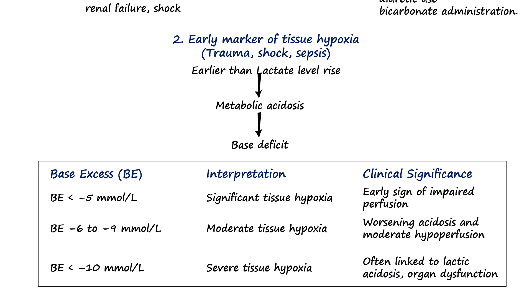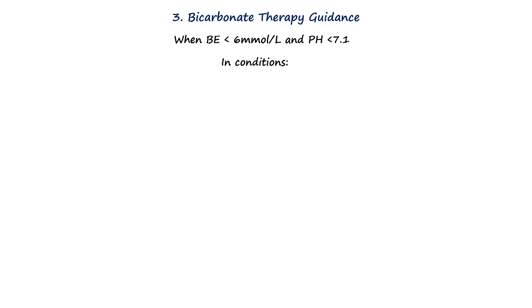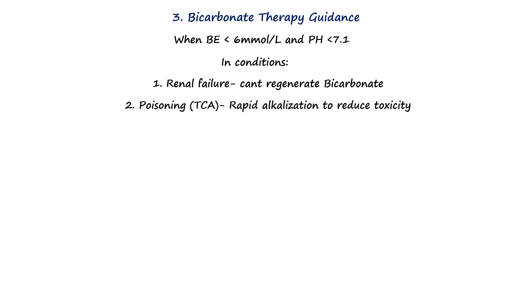The severity can be categorized as base excess between negative 6 to negative 9 mmol/L suggesting moderate shock, and base excess less than negative 10 mmol/L indicating severe shock, often linked to high lactate and organ dysfunction. Some clinicians give sodium bicarbonate if the pH is below 7.1 and base excess is less than negative 6 mmol/L. This is common in renal failure where the kidneys can't make enough bicarb, and it can also be used in poisoning like TCA overdose to make the blood more alkaline and reduce toxicity.